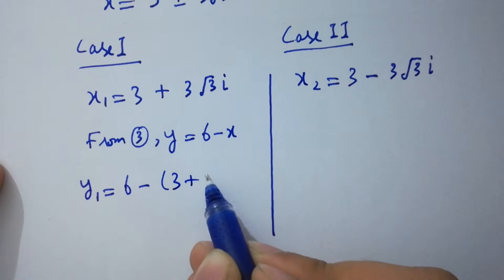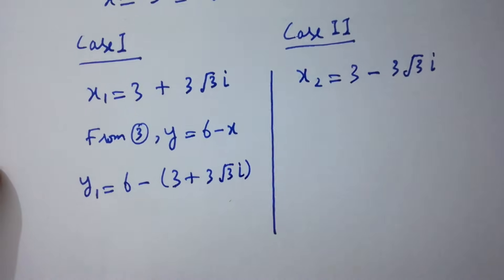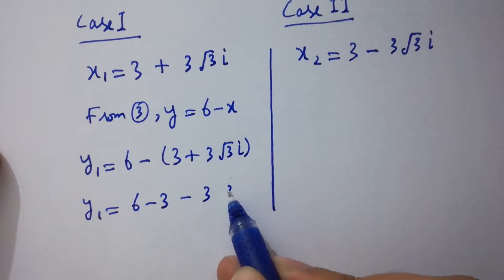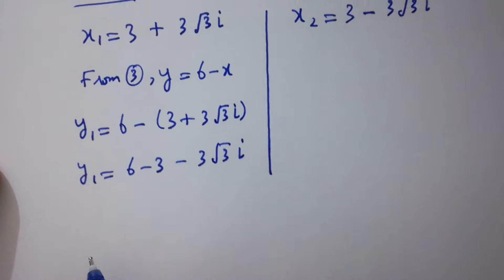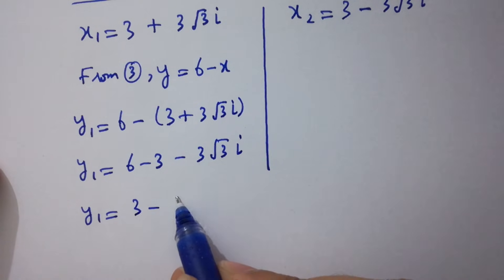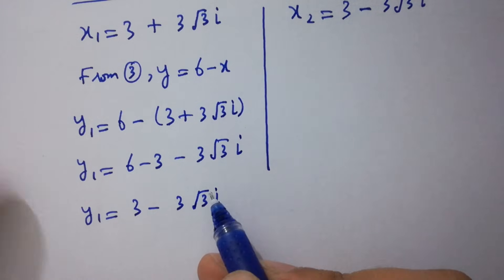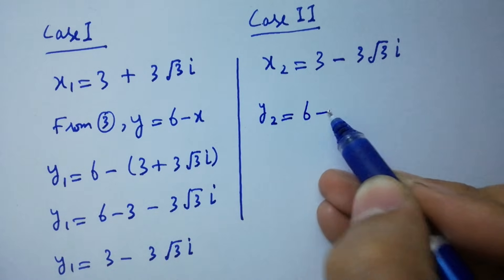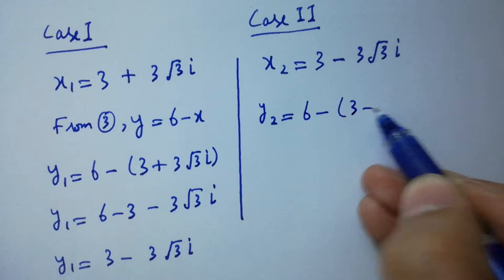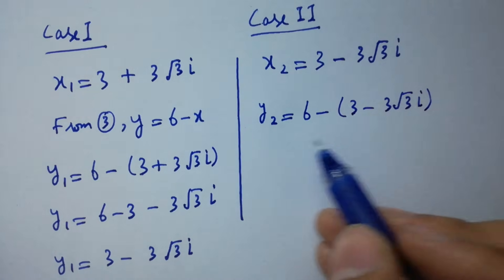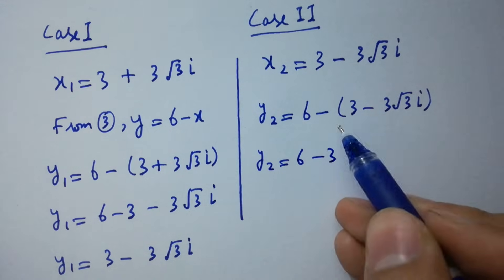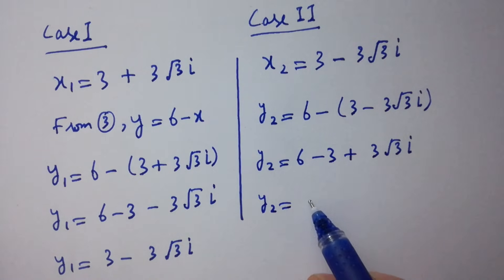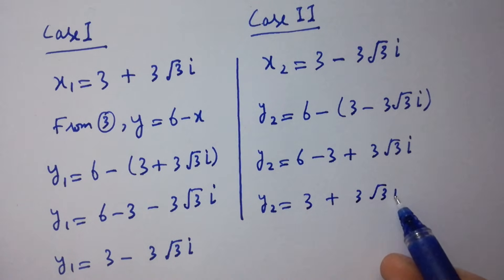From the third equation, y1 equals 6 minus x1, which is 6 minus (3 plus 3 square root of 3 i). So y1 equals 6 minus 3 minus 3 square root of 3 i, giving y1 equals 3 minus 3 square root of 3 i. Similarly, y2 equals 6 minus x2, which is 6 minus (3 minus 3 square root of 3 i), giving y2 equals 3 plus 3 square root of 3 i.